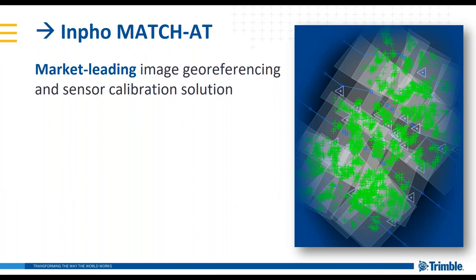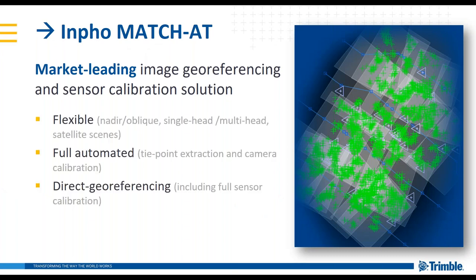The Inpho Match AT software is an aerial triangulation package, also referred to as geo-referencing. It can support many different camera heads — traditional nadir, oblique, single head, and multi-head — and can also accept satellite scenes into projects. Tie point extraction and camera calibration are fully automatic and hands-off. The software also supports direct geo-referencing as well as full sensor calibration.